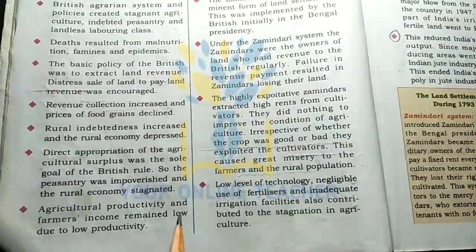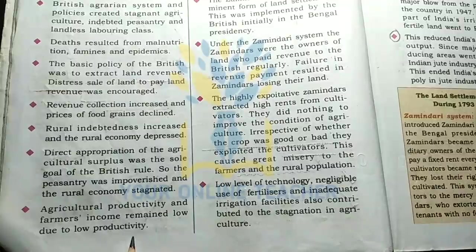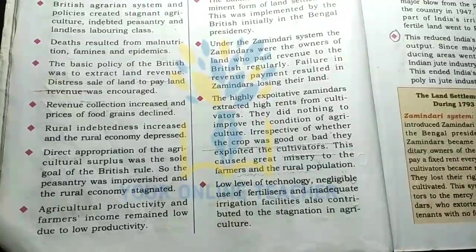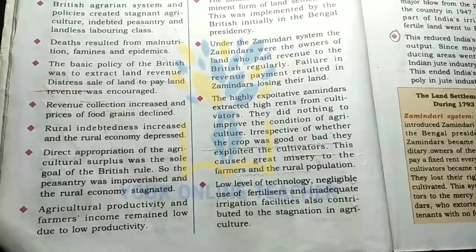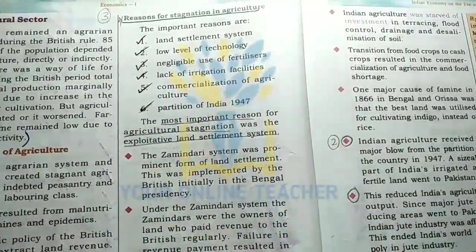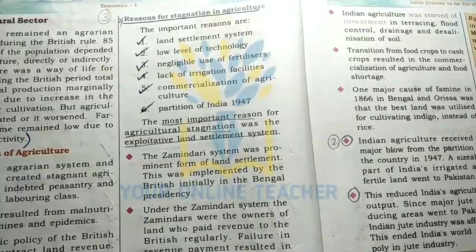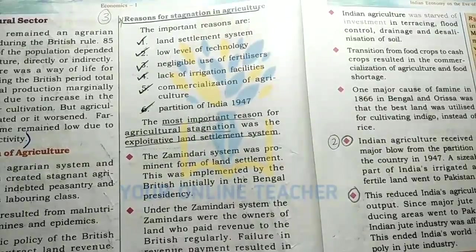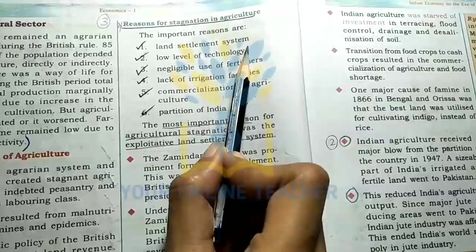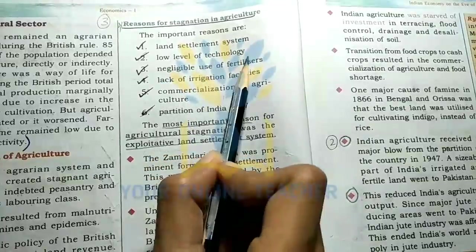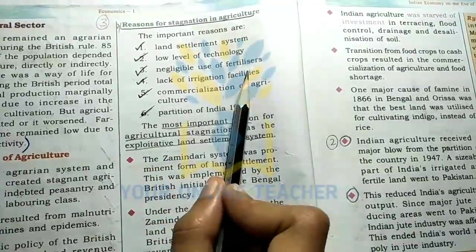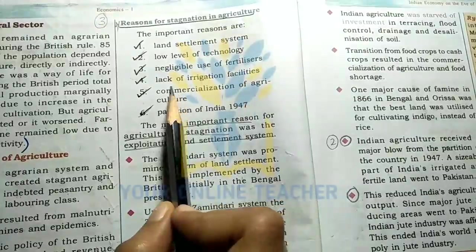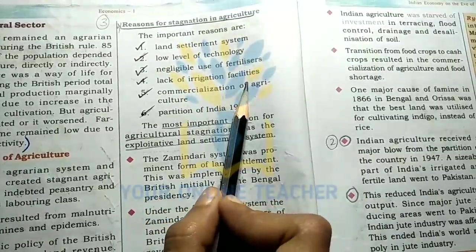Agricultural productivity remained low. Reasons for stagnation of agriculture include: the land settlement system, low level of technology, negligible use of fertilizers, and lack of irrigation facilities.